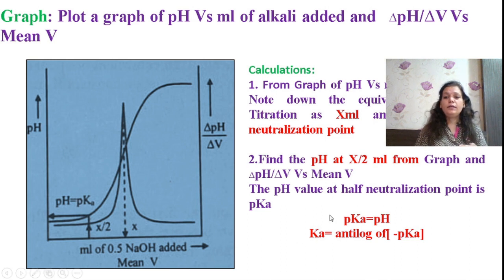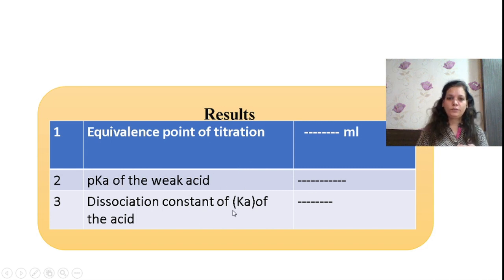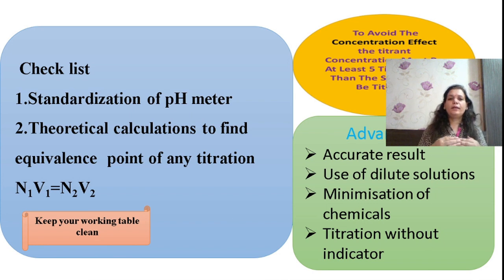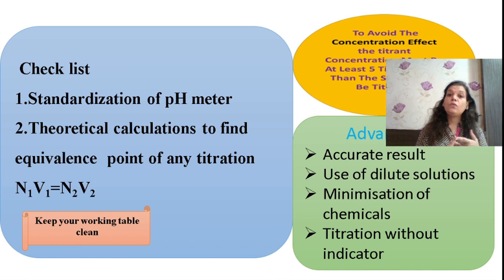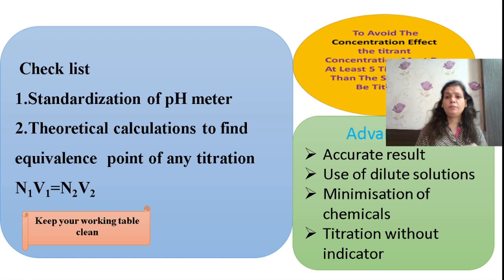Calculate Ka as the antilog of minus pKa. Tabulate all results: equivalence point as x ml, pKa value, and Ka value. If the experiment gives unexpected results, verify by checking whether the pH meter was standardized. For theoretical verification, since it is a stoichiometric reaction, use n₁V₁ = n₂V₂ to confirm where the equivalence point should occur.